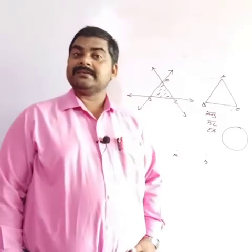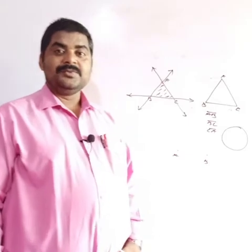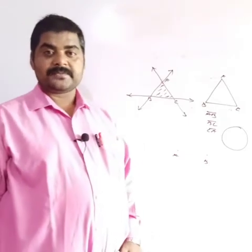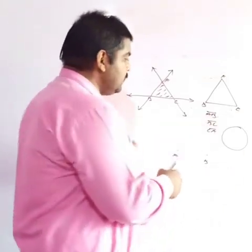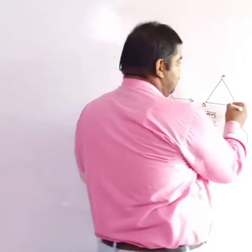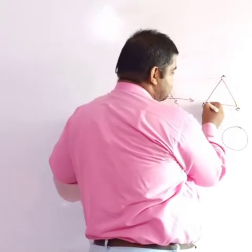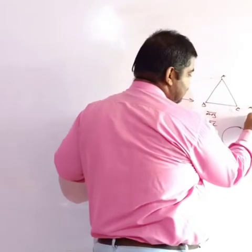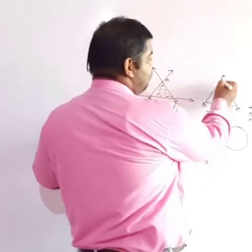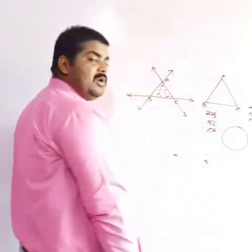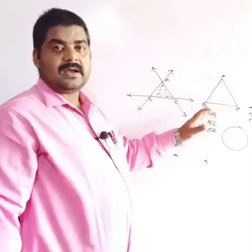To summarize: a triangle is a polygon, specifically the first member of the polygon family. It is a simple closed figure bounded by three line segments, which are known as the sides of the triangle. Also, a triangle has three vertices — A, B, and C — and the point where two sides of the triangle meet is known as a vertex.